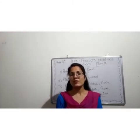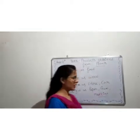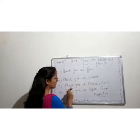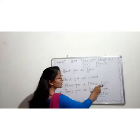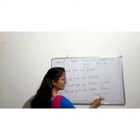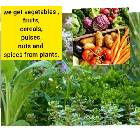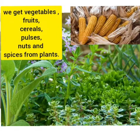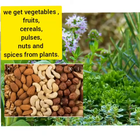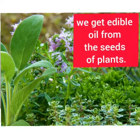You know that we get various products from plants. Plants give us food, wood, fiber, coil, paper, gum, and medicine. We get vegetables, fruits, cereals, pulses, nuts, and spices from plants.